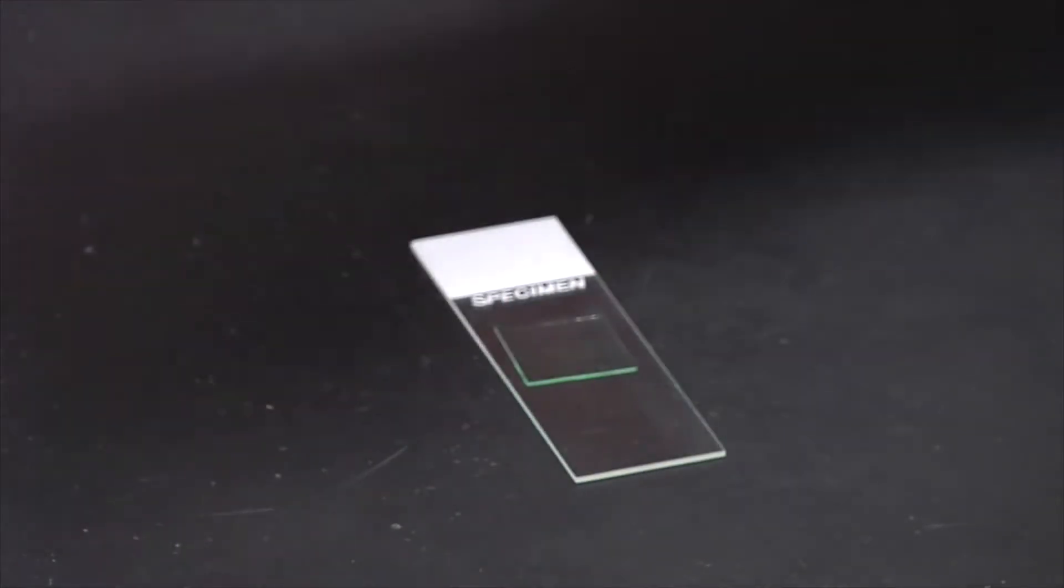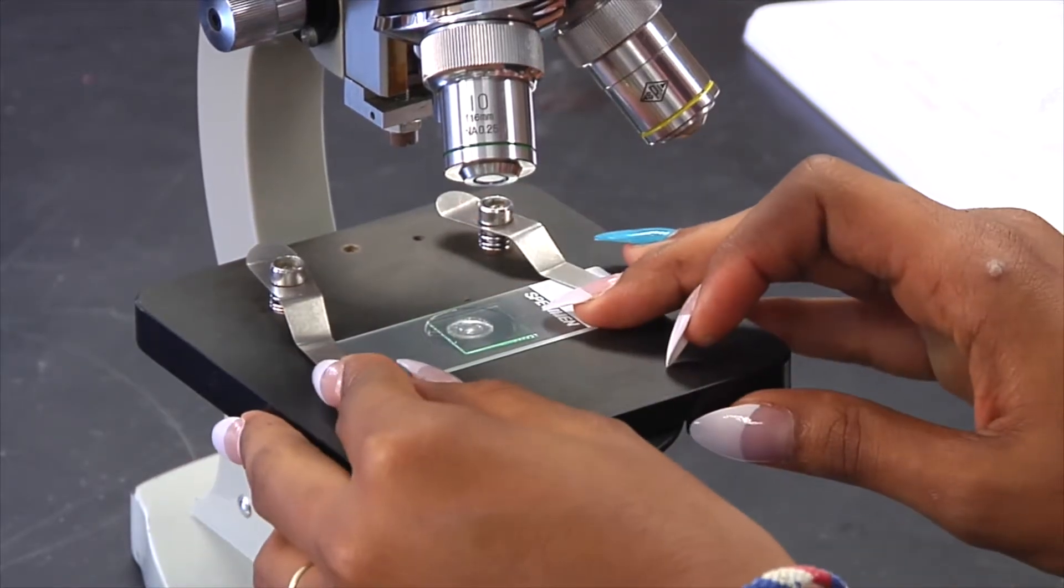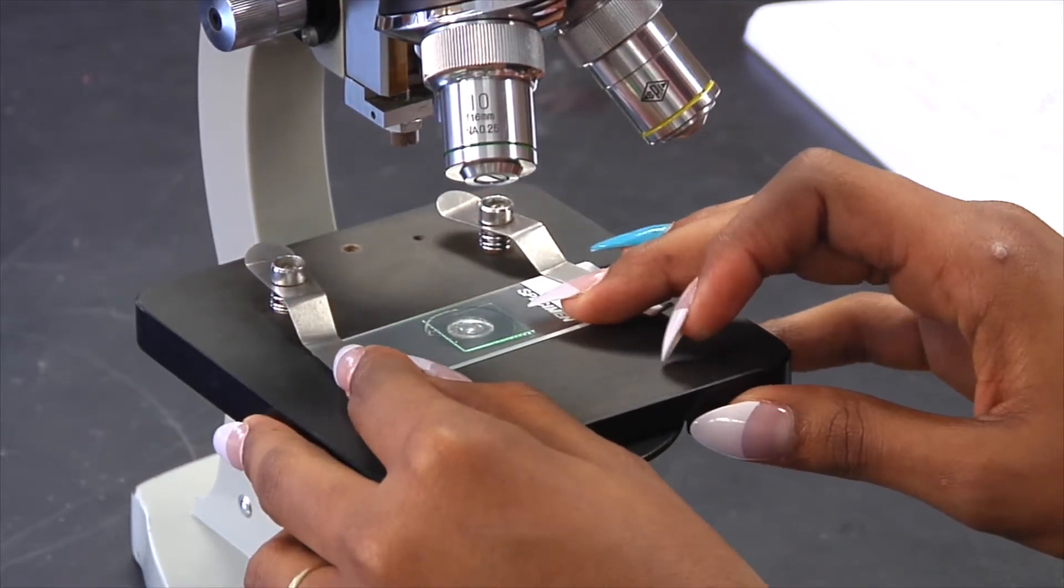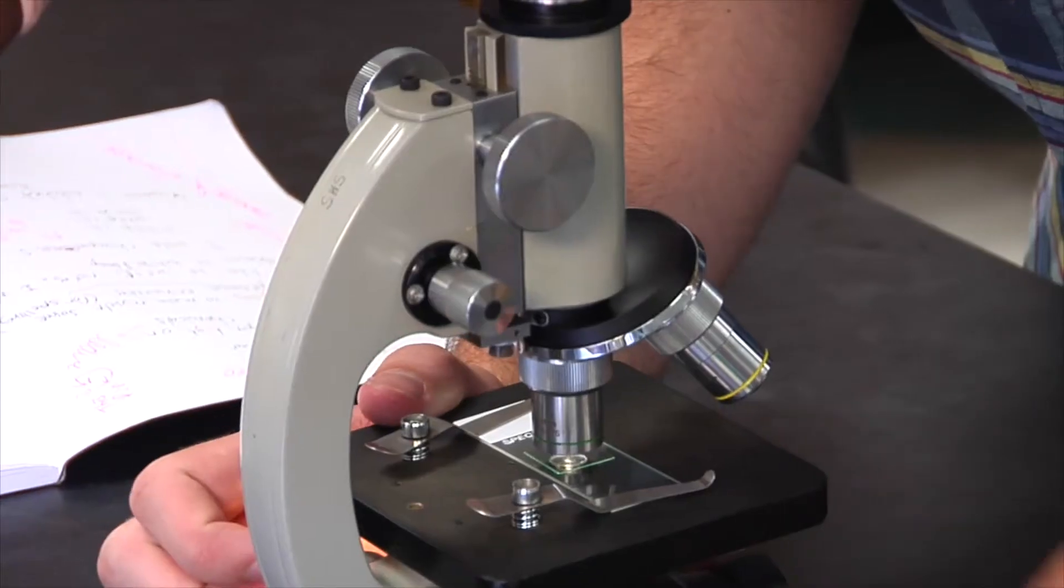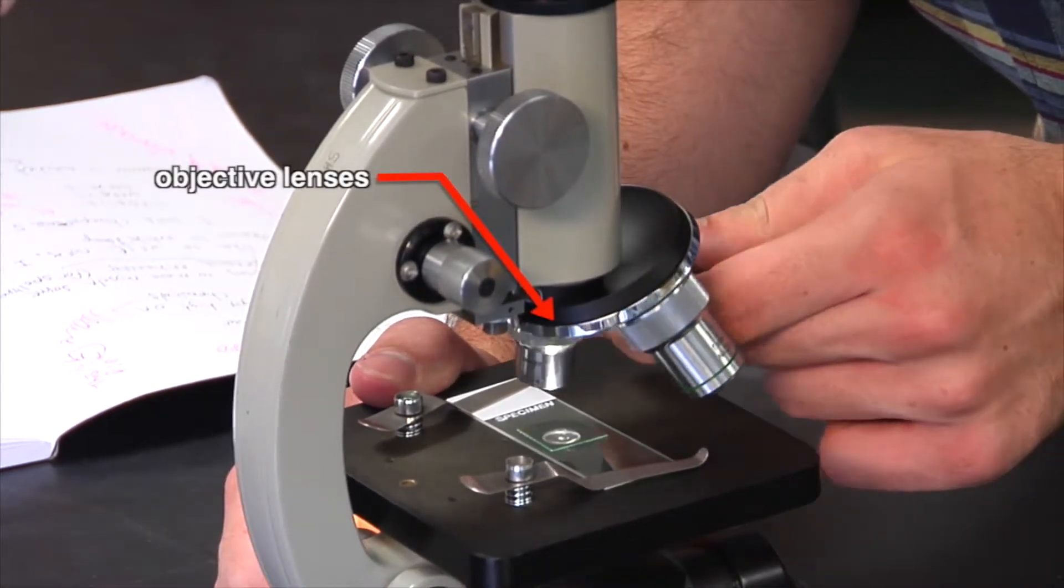The microscope slide is now ready for viewing. Place the slide on the stage of the microscope. Clip the slide in place so that it cannot move around. Turn the objective lenses on the microscope so that the lowest magnification lens is directly above the slide.